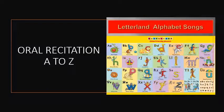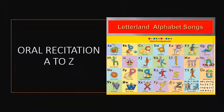We have to start our activity by orally reciting alphabets A to Z, like we have done earlier. Like that only, we have to recite letters A to Z — like this: